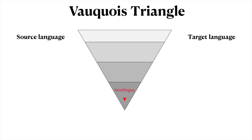It has been hypothesized by various thinkers, beginning at least as far back as 17th century Europe, that one could, in principle, develop a truly language-independent, deep semantic representation that is interlingual in nature — that is, it is the same for all languages. We know of no such representation; no one has ever successfully developed one, but you could still imagine such a representation.